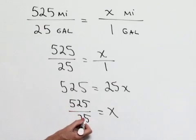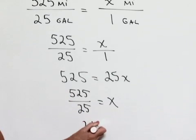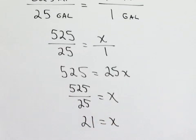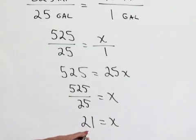Dividing 525 by 25 gives us a result of 21. So 21 is going to be the value for x, which means that we'll end up with 21 miles per gallon of gas.